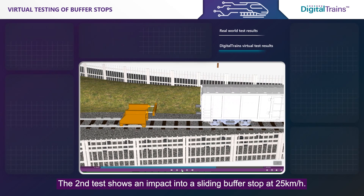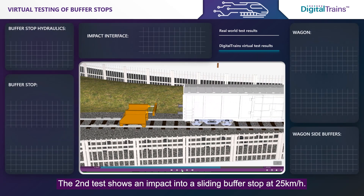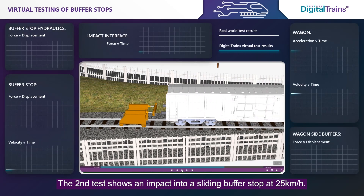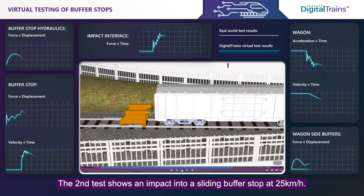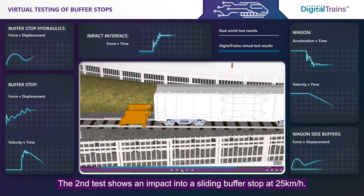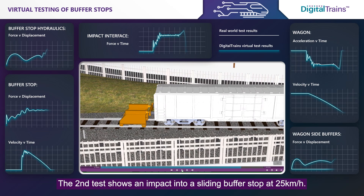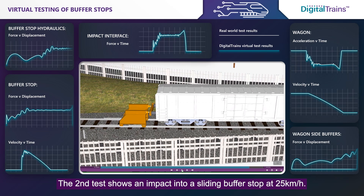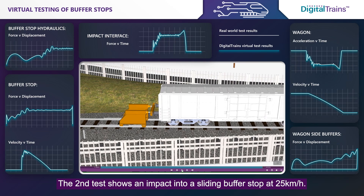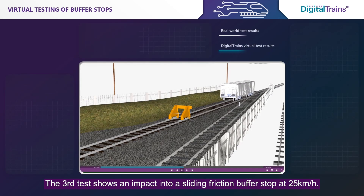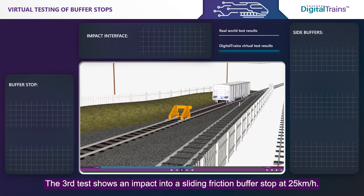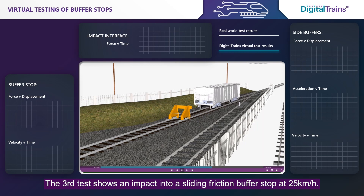The second test shows an impact into a sliding buffer stop at 25 kilometers per hour. The third test shows an impact into a sliding friction buffer stop at 25 kilometers per hour.